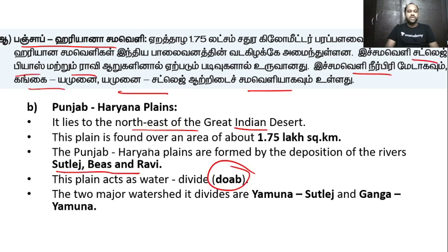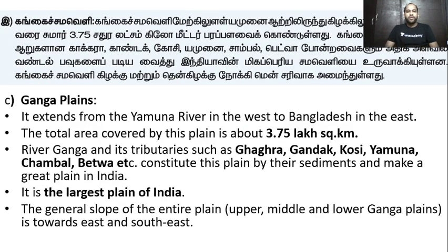India has high production and high yielding land here. The Punjab-Haryana plains is divided by two major watersheds. The first division is the Yamuna-Sutlej watershed and Ganga-Yamuna. The Ganga Plains has a total area of 3.75 lakh square kilometers. The extent of the Yamuna River is in the west.